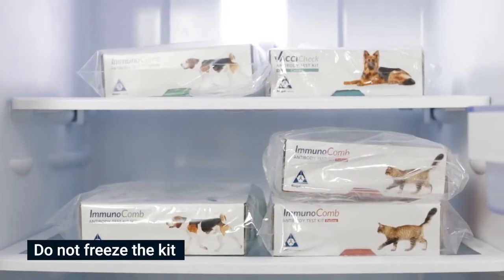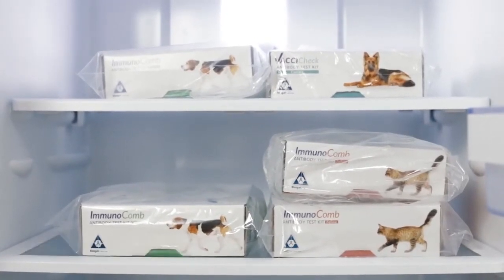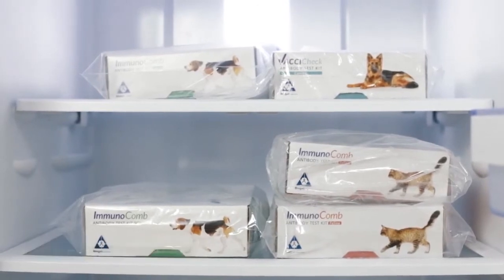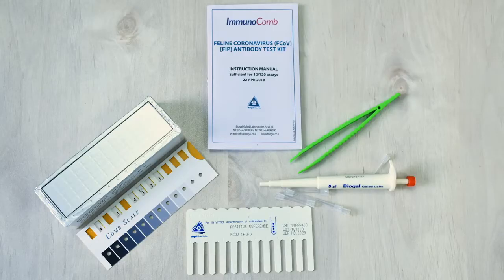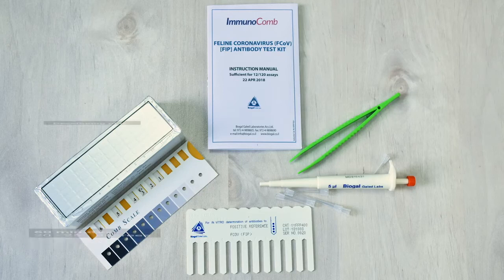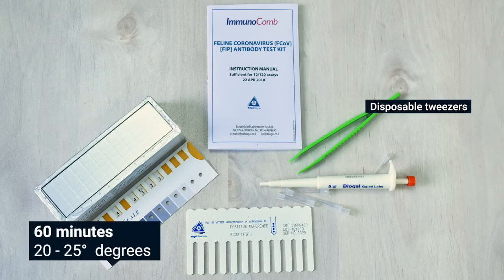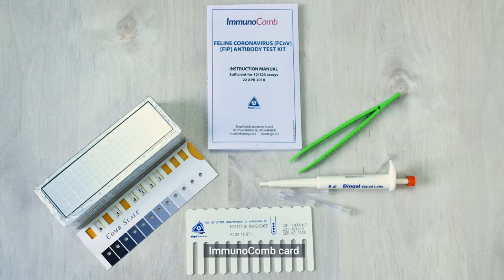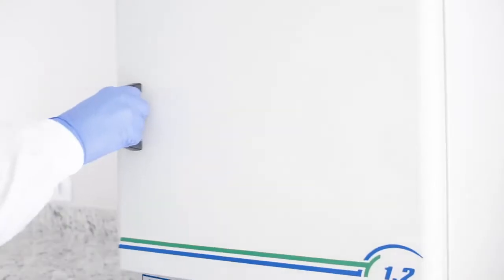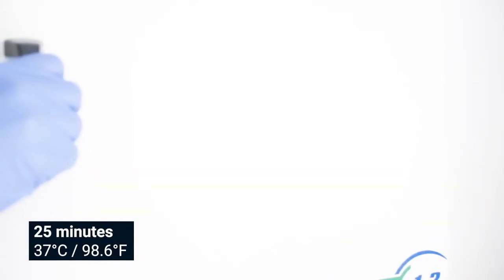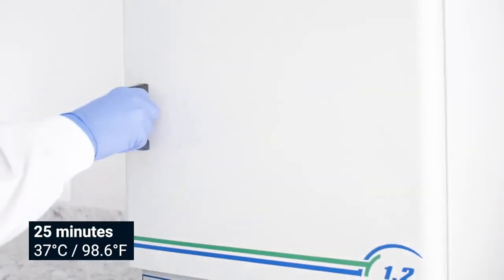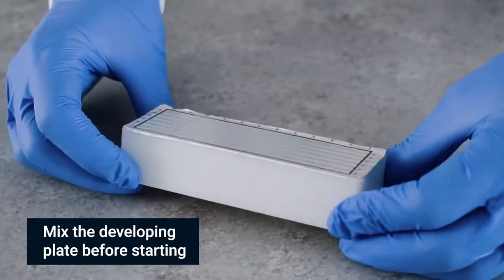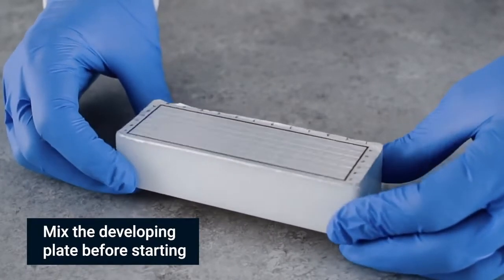Store the kit under normal refrigeration between 2 and 8 degrees Celsius or 36 and 46 degrees Fahrenheit. Before conducting the test bring the developing plate to room temperature by removing all kit components from the carton and placing them on a workspace for 60 minutes, or incubate only the plate at 37 degrees Celsius or 98.6 degrees Fahrenheit for 25 minutes. Mix reagents by gently shaking the developing plate several times prior to use.